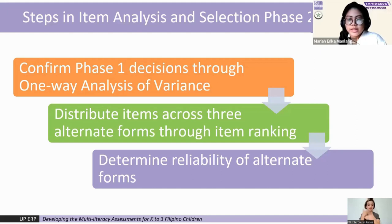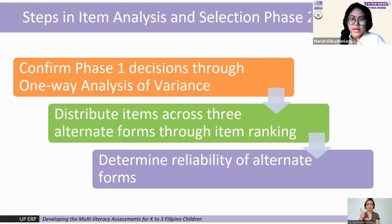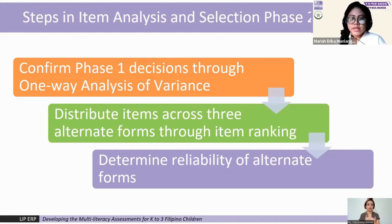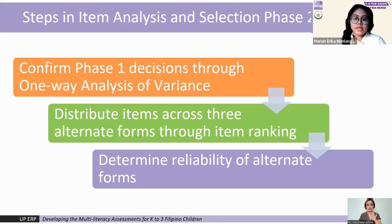Following this step, we ranked the test items in order of their difficulty, measured by tallying the total number of learners who answered the item correctly. These items were then distributed across the three alternate forms for each multimodal version. After distributing the test items for all components, we conducted a measure of reliability, both in terms of the test's internal consistency as well as the reliability of all three alternate forms.